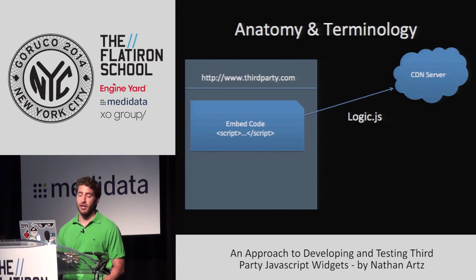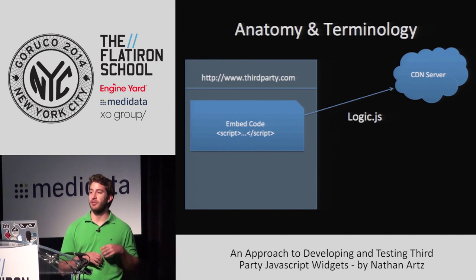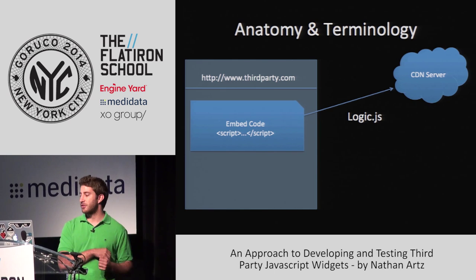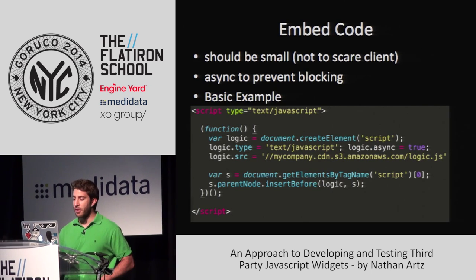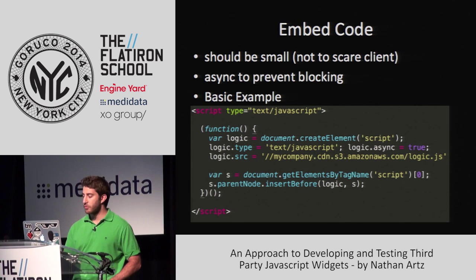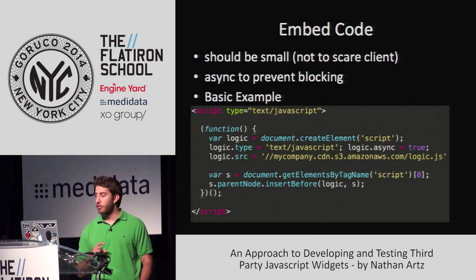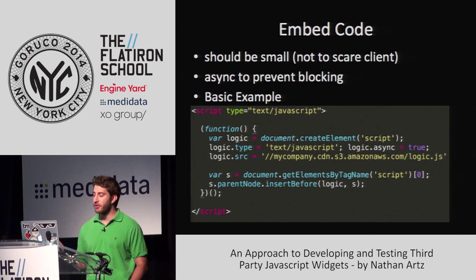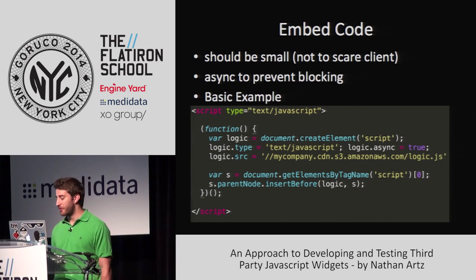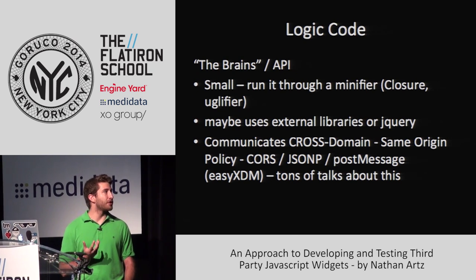Generally, they have kind of two parts. You have your embed code. If any of you have used Google Analytics before, you have that little code. You give it to the client, they put that on their site, and usually it loads something more substantial — all the logic. The embed code usually looks something like this, and it's just going to load a JavaScript from our third party. You want it to be small; you don't want to give your client a huge embed code. The logic code is the meat — what we actually want the code to do.